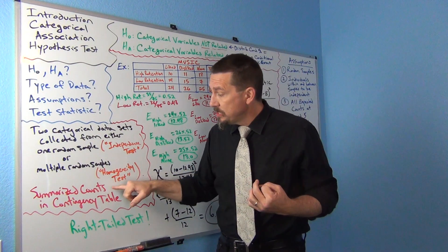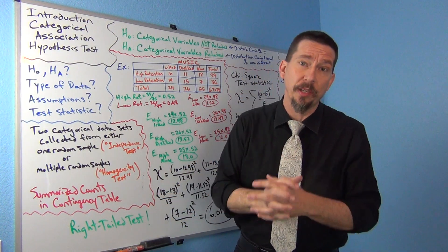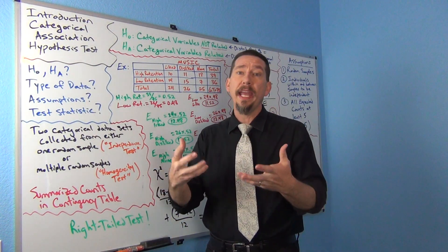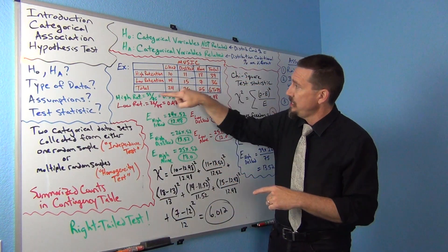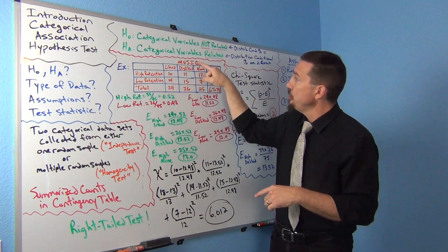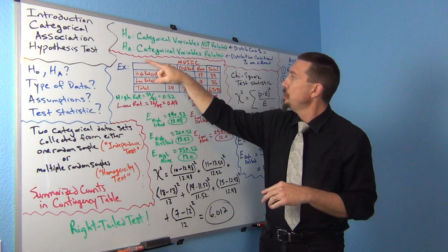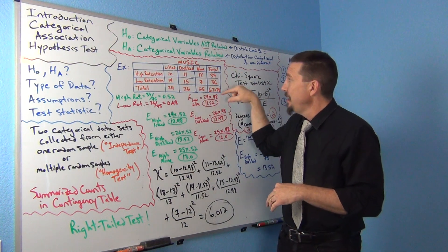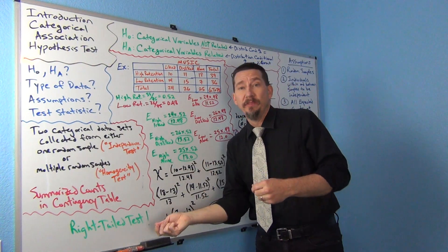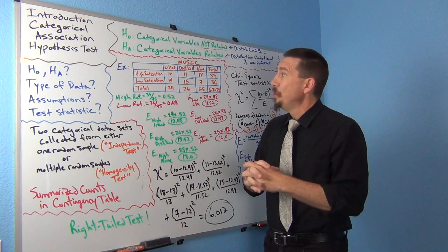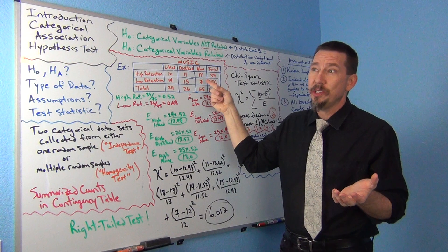There are also slight differences in how we check our assumptions depending on whether we collected data from one or multiple random samples. One big key is that you can summarize your counts in a contingency table, also called a two-way table. A contingency table summarizes your counts — this one has to do with music and memorizing information. If your data looks like this, you know you're doing the categorical association test.